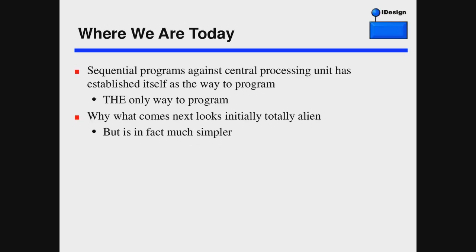But beyond the complexity, for more than 40 years we've grown accustomed to sequential programming — we are the program and the central processing unit executes it. It has established itself as the only way to program. When people think about programming, they think sequential programming. This is why what comes next, as far as the next epoch, will look totally alien at first — because it goes against how we've trained our brains to think about programming. But it is in fact much simpler and superior in so many ways.